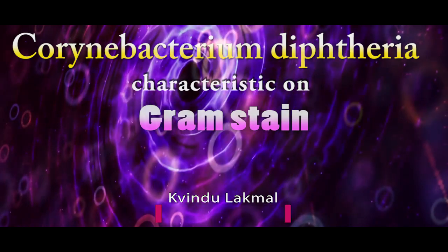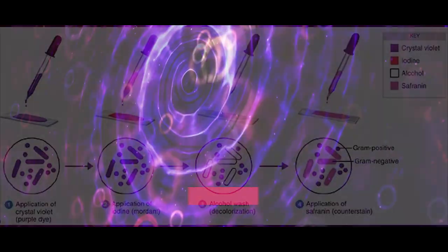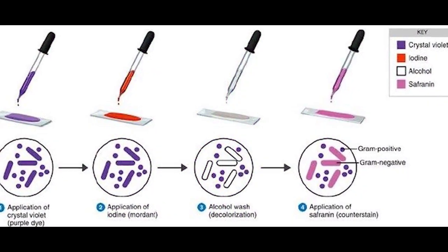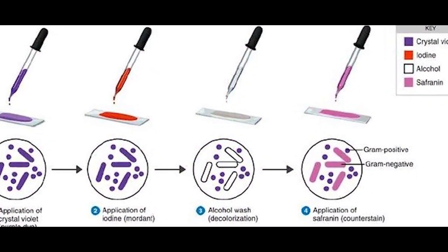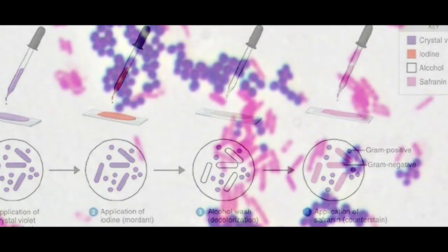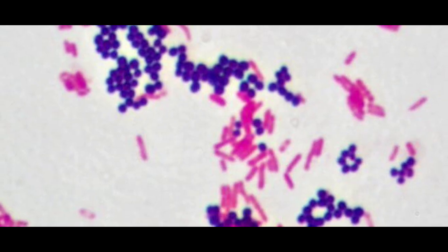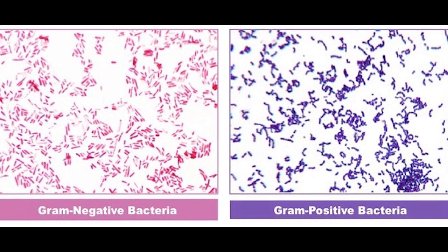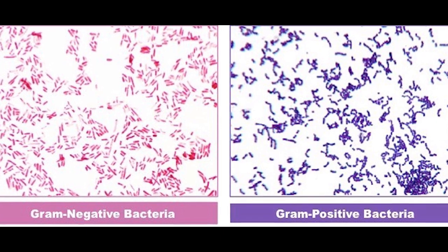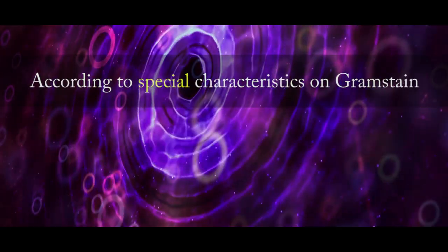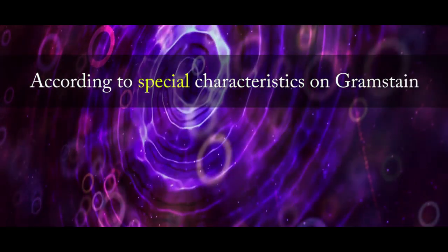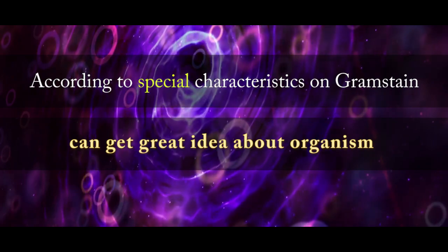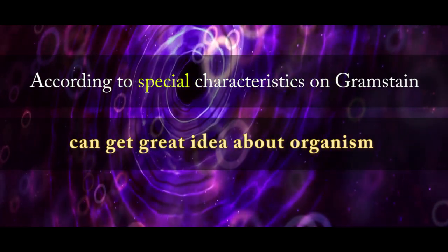Gram stain is a bacteriological laboratory technique used to differentiate bacterial species into two large groups: gram-positive and gram-negative. According to special characteristics on Gram stain, we can get an idea about the organism.